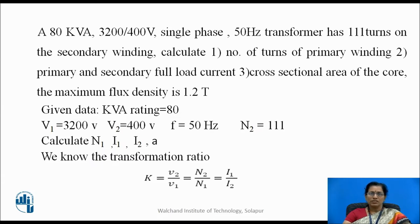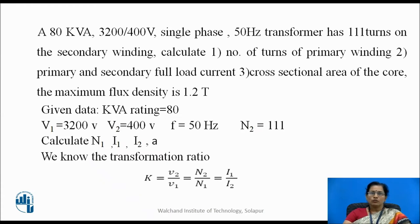A 80 kVA, 3200/400 volt, single phase, 50 Hz transformer has 111 turns on the secondary winding. Calculate: 1) number of turns of primary winding, 2) primary and secondary full load current, 3) cross-sectional area of the core, if the maximum flux density is 1.2 Tesla. Given data: kVA rating = 80, V1 = 3200 V, V2 = 400 V, f = 50 Hz, N2 = 111.